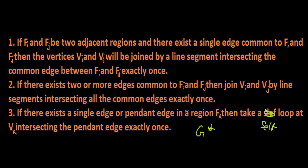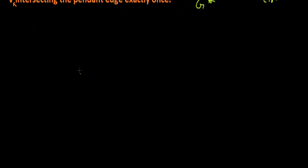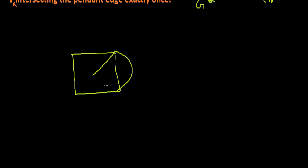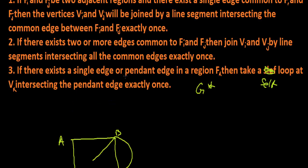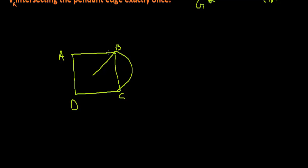G* is said to be the dual of G. Let us see by the help of an example. Suppose we have a graph labeled a, b, c, d. We start from the first step — we need to label all the regions and vertices. So f1, f2, f3 are the regions, and v1, v2, v3 are the vertices.